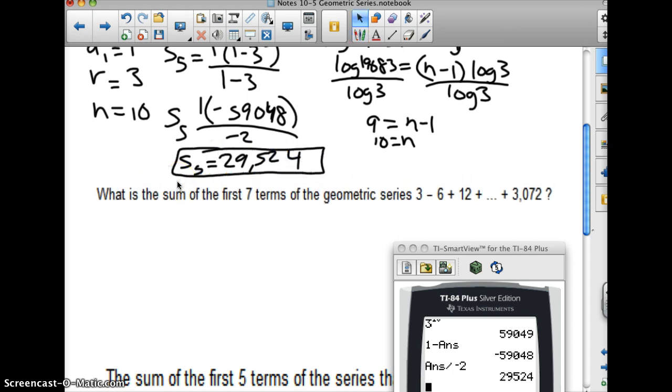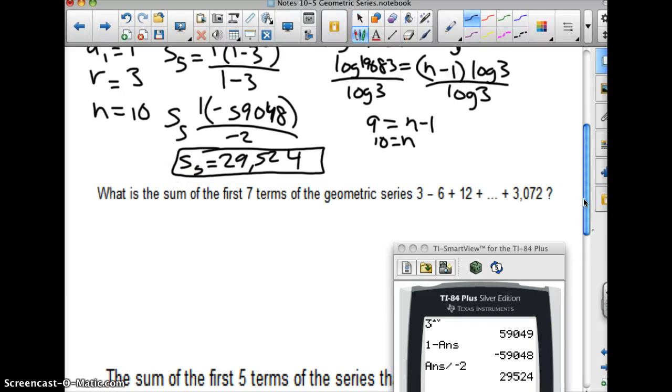Next, what is the sum of the first 7 terms of this geometric series? Now this one's very similar. In order to find S of n, we'll set it up here. It's going to be a1, 1 minus r to the n over 1 minus r.